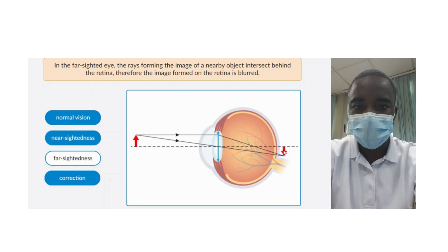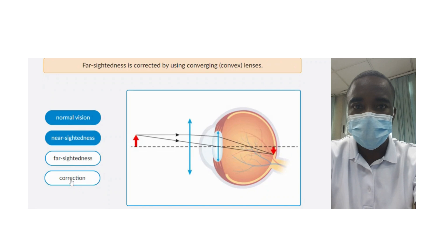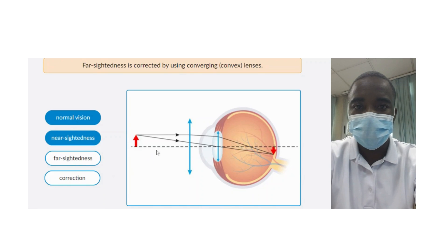Nearsightedness, or myopia, is a common vision disorder where the eye is too long or the cornea is too curved, causing light to focus in front of the retina rather than on it. The simulation helps students understand the causes and effects of nearsightedness, including how it affects vision and how it can be corrected with concave lenses or laser surgery.